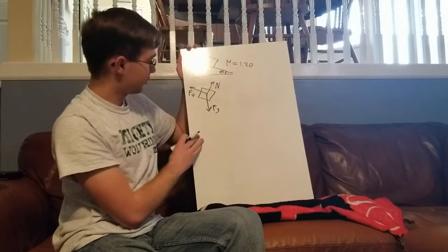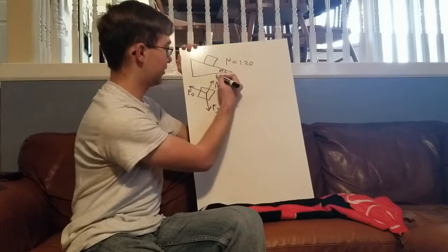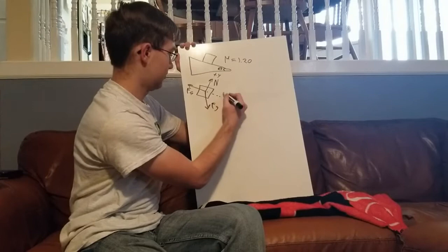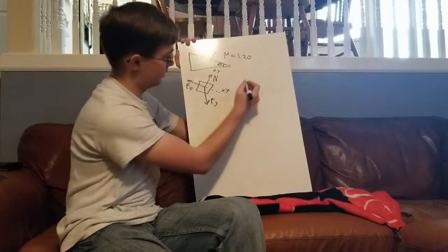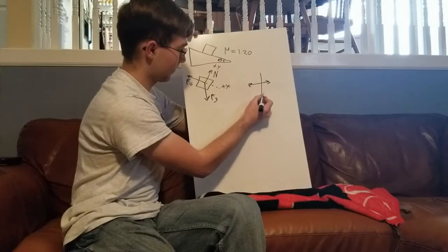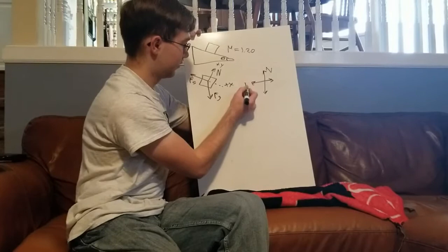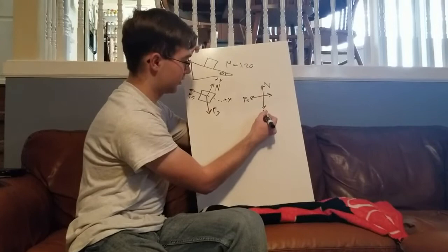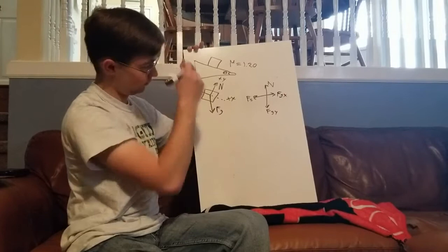I'm going to want to break this into its different components. I'll make this be positive y over this way, positive x. So, what I have is my normal, my force of static friction, force of gravity in the y direction, and the force of gravity in the x direction.